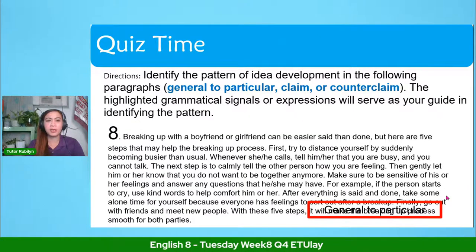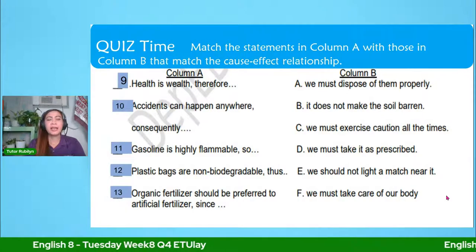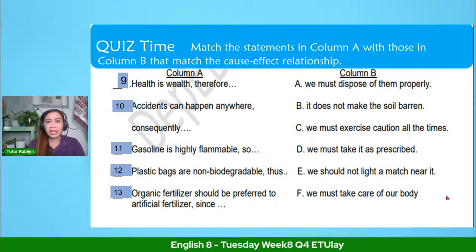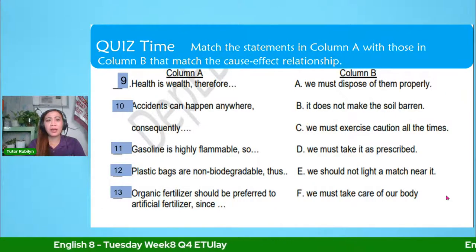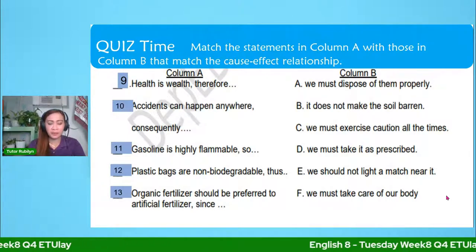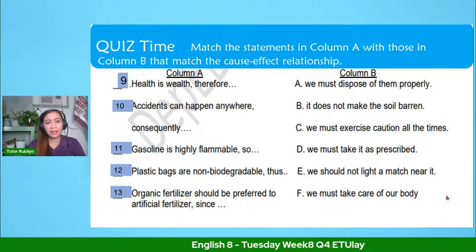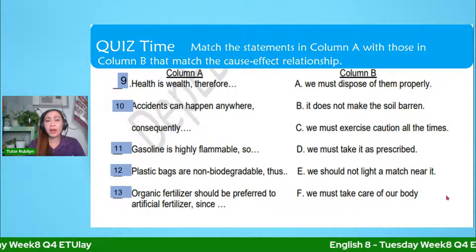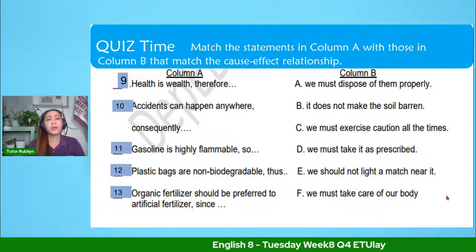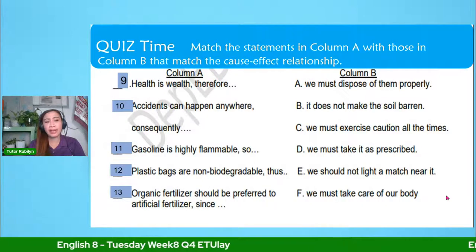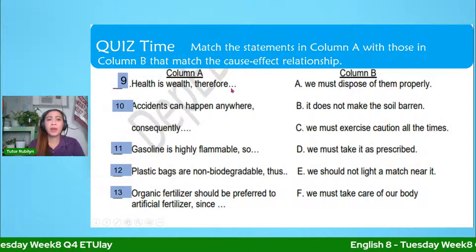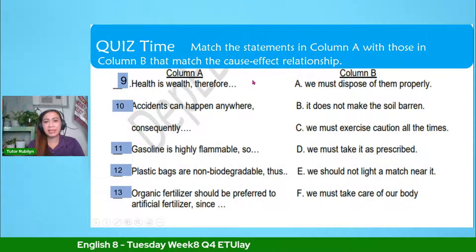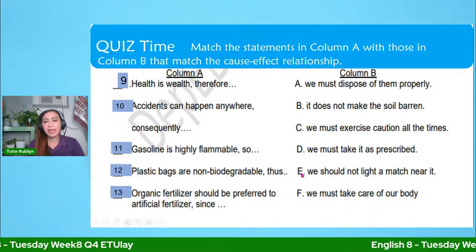Let's continue. It's another type of test — matching type. You need to match the statements in column A with column B that match the cause and effect relationship, for numbers nine through thirteen. Write the number and the letter of the correct answer. For number nine: health is wealth — the answer is letter F: we must take care of our body. Sometimes we don't have enough money, but as long as our health is okay, everything is fine.